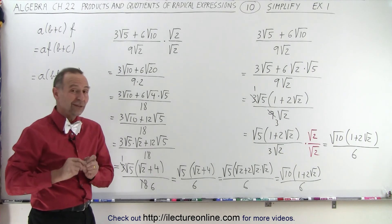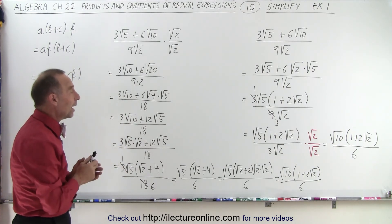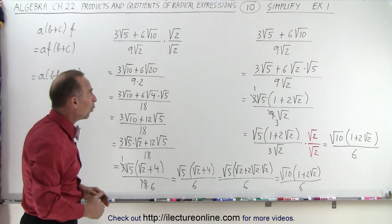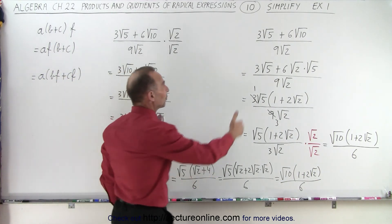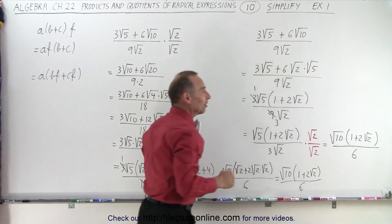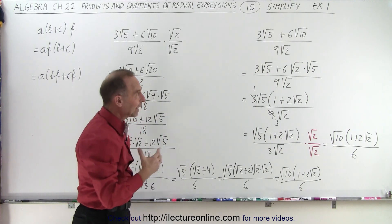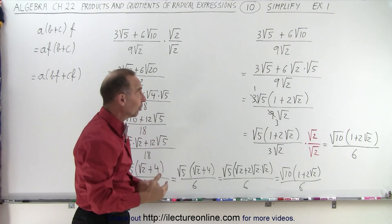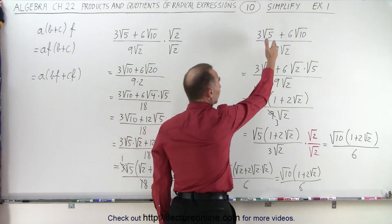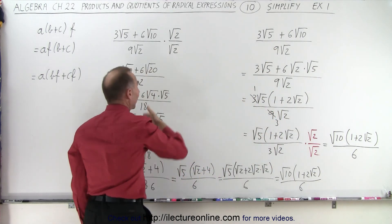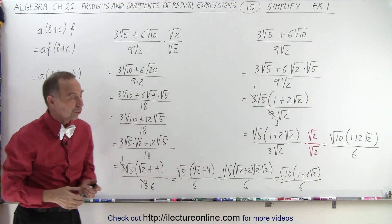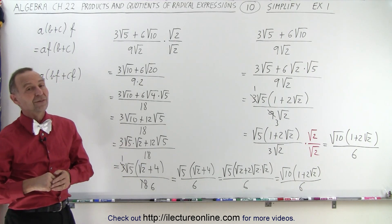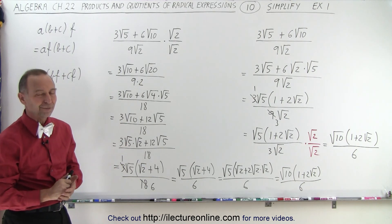Notice either way you end up in the same spot — you can first rationalize the denominator and then simplify, or first simplify and then rationalize. Personally, I like to simplify things as much as possible, so I would prefer the first method, but it all comes down to personal preference. Either way we end up with the same answer, and that is how it's done.